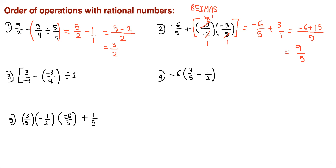For anyone who missed the last lesson: when you have two rational numbers being multiplied, just look at how many negatives you have. If you have an even number of negatives, the answer is positive; if you have an odd number of negatives, the answer is negative. Here it's even because we have two negatives, so the answer is positive 3.